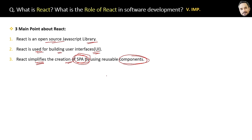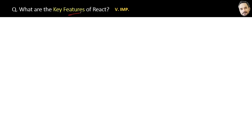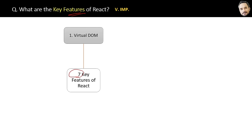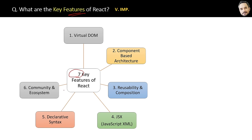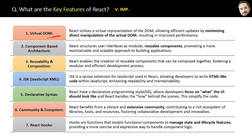What are the key features of React? Here are the seven key features: virtual DOM, component-based architecture, reusability and composition, JSX (JavaScript XML), declarative syntax, community and ecosystem, and React hooks. All the advantages of React come from these features. In upcoming questions we will explore each of them in detail — how to implement them and how to get the benefit from them.